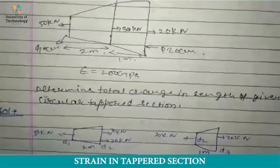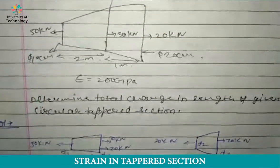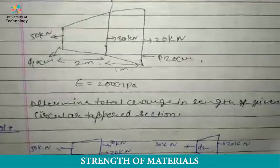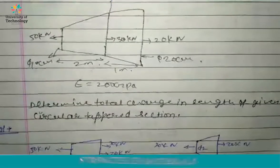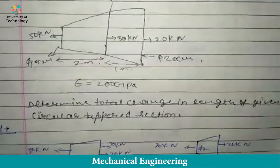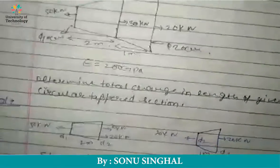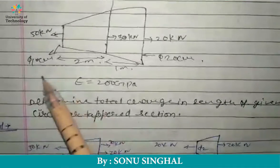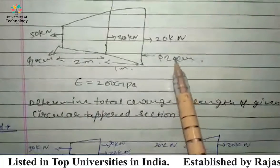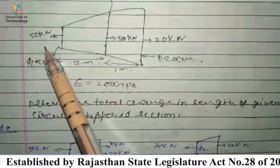We understand the topic is change in the length of a tapered section. In this diagram, we have the internal diameter of the tapered section that is 10 centimeter and the outer diameter of the tapered section that is 20 centimeter, and the load applied on one part is 50 kN.